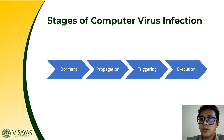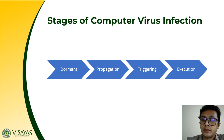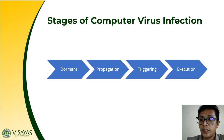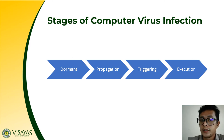After the dormant stage, the virus now starts to propagate by attaching itself to files and programs. Viruses need a host to infect the computer system before they can start executing, because they are only executed once you run or open a file or program. After propagating, the virus will be triggered and will now start executing or infecting the computer system.